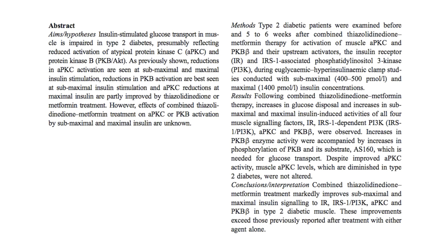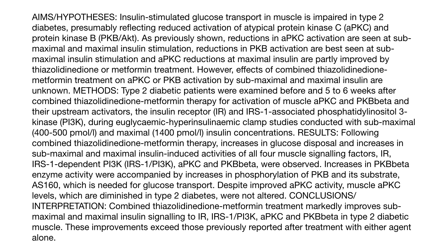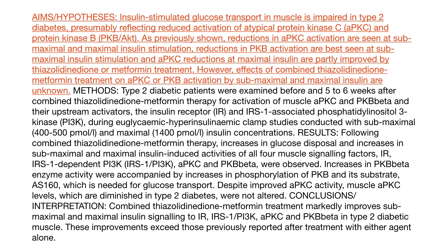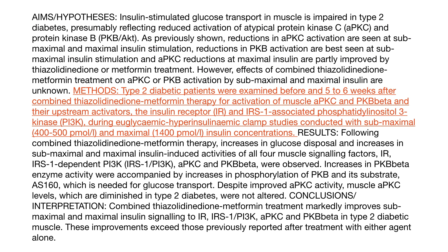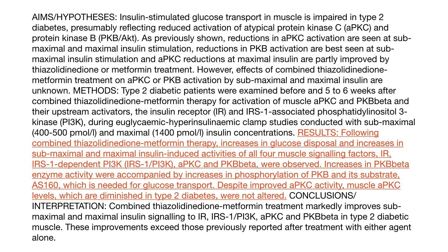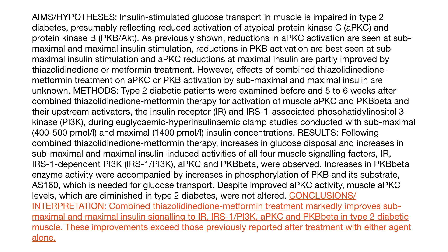If we look at the second type of abstract where they're using aims and hypothesis and method headings, again clearly we've got sections. We've got an aims and hypothesis section, a method section, a results section, and finally a conclusion and interpretation section.